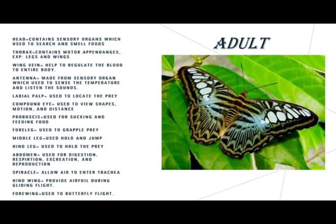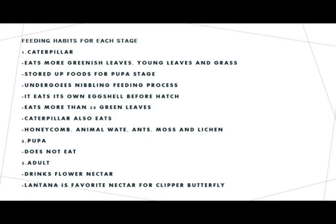Feeding habits for each stage: first, the caterpillar eats small greenish young leaves and grass, storing food for the pupal stage. It undergoes a nibbling feeding process, eats its own eggshell before hatching, and consumes more than 20 green leaves. The caterpillar also eats honeydew, animal waste, moss, and lichen. During the pupal stage it does not eat. As an adult, it drinks flower nectar; Lantana is the favorable nectar for the clipper butterfly.